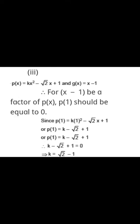For the third part of Q3 with irrational coefficients, don't panic when you see under root or decimals. Check with (x−1), so x = 1. Put x = 1: k(1²) − √2(1) + 1 = 0, which gives k − √2 + 1 = 0, therefore k = √2 − 1.